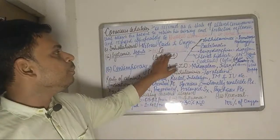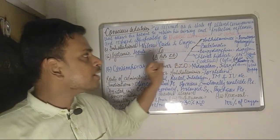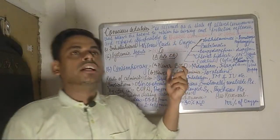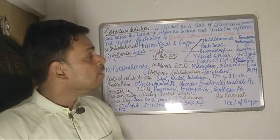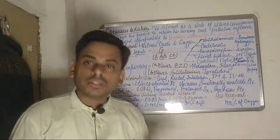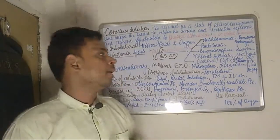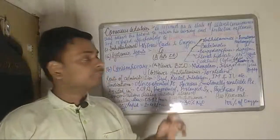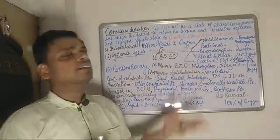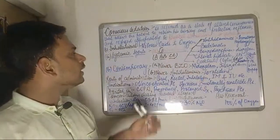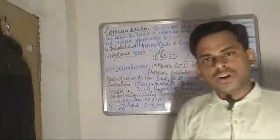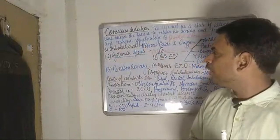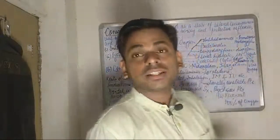The two B's refer to barbiturates and benzodiazepines. The most commonly used barbiturate for this purpose is phenobarbitone, and the commonly used benzodiazepine is diazepam. The two C's refer to chloral hydrate and the lytic cocktail. These are the conventional agents used for conscious sedation.